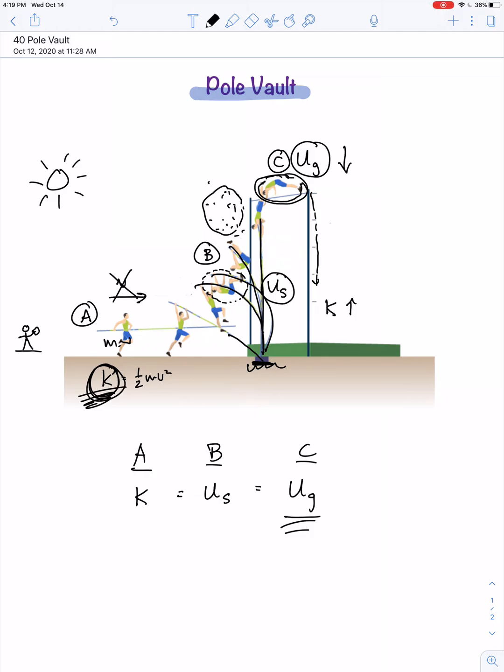So, which speed is greater? The speed of impact that the pole vaulter has with the mat, or the speed they had as they were running down the track? Well, if we really do ignore all of the non-conservative forces of friction and air resistance, then the speed of impact with the mat would be exactly equal to the speed that they were running with here.